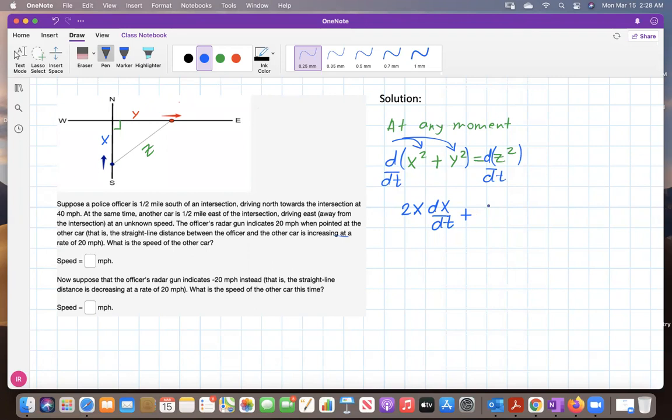Similarly, the derivative of z² with respect to time should be 2z(dz/dt). So here I have the relationship between the rates of change.